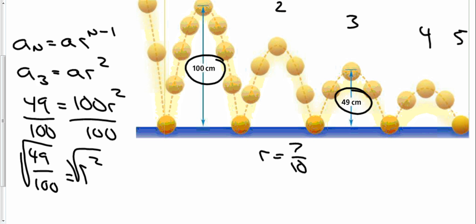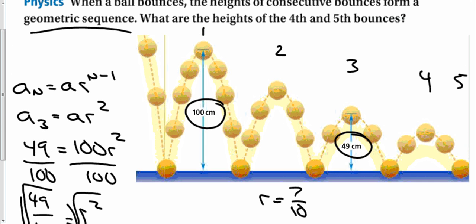So, now all I have to do to complete the sequence here, I take 100 times 0.7, which is 70. Times 0.7 is 49. Perfect. Times 0.7 is 34.3. And for 5, it's going to be 24.01. So, the fourth and the fifth. The fourth bounce goes up 34.3 centimeters. The next bounce 24.01. And it will keep going as it goes down.